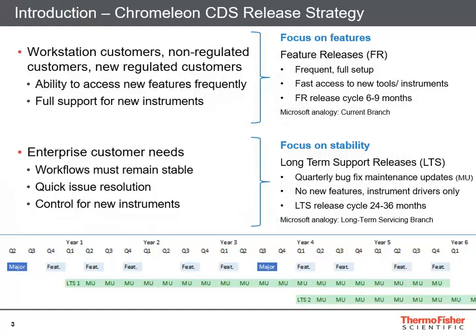The feature release stream is aimed at workstation customers and non-regulated customers who can upgrade and move quickly. Even regulated customers who are new and want to pick up the latest version when they first install Chromeleon are welcome to use this stream. It gives you the latest features and instruments. The release cycle is approximately six to nine months, keeping you up to date and allowing us to release new features quickly.